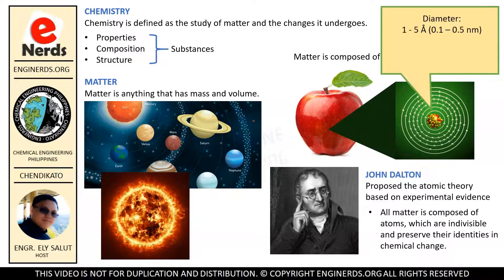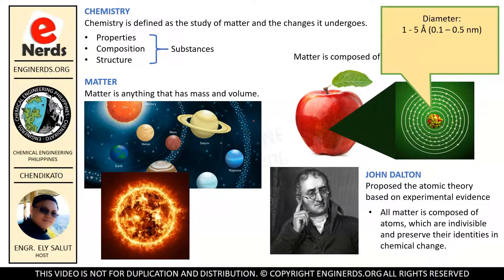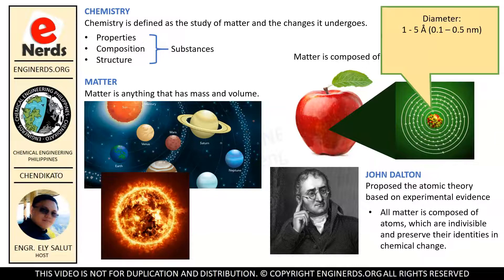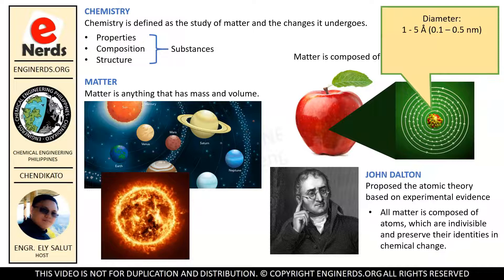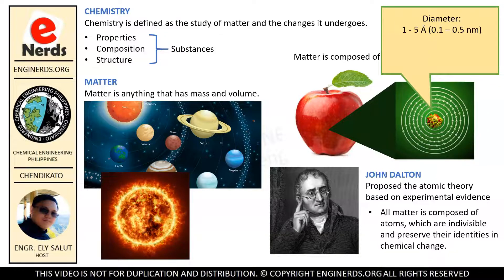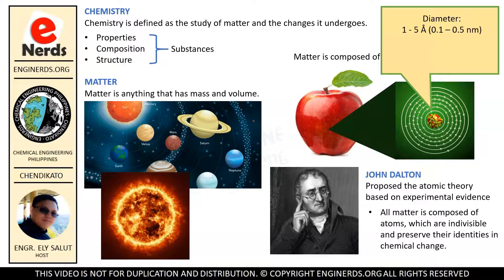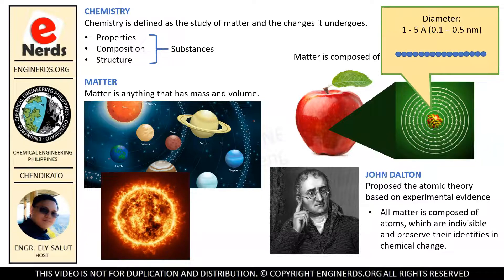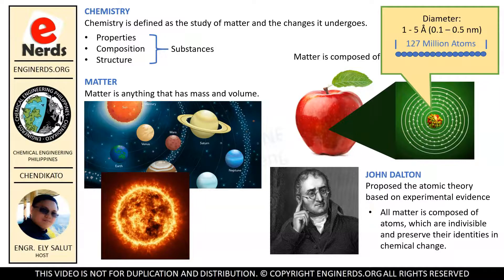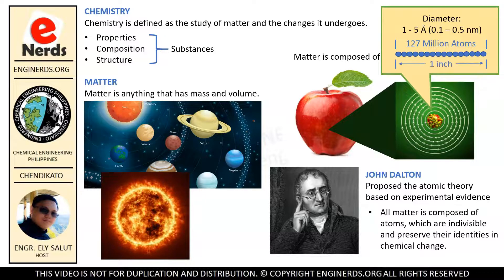These atoms that make up all matter are extremely tiny. In general, they have diameters of between 1 and 5 angstrom, or about 0.1 to 0.5 nanometers. To visualize such a small size, imagine that if we were to place atoms of diameter 2 angstrom side by side, it would take over 127 million of them to occupy a 1 inch length. That is how small an atom is.